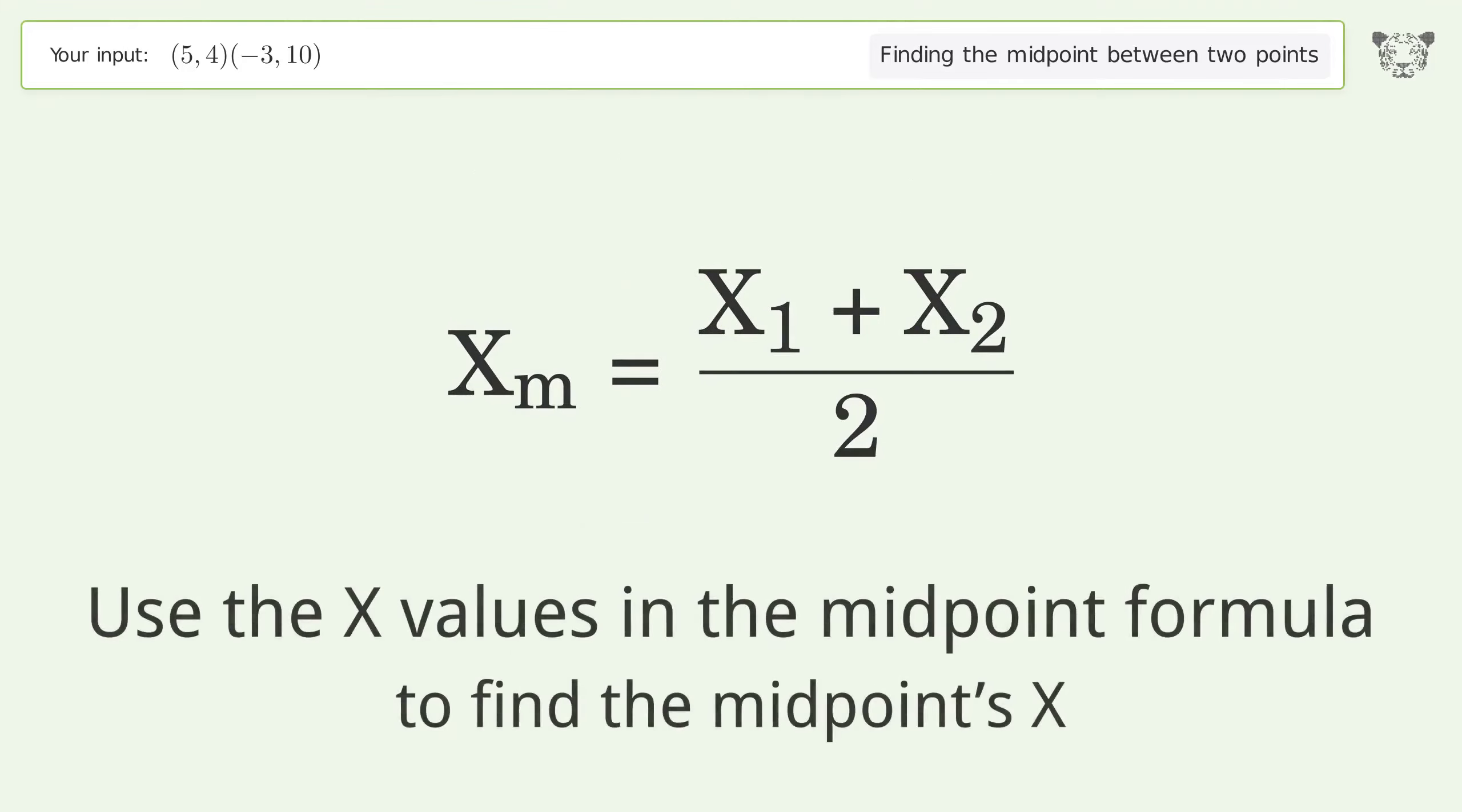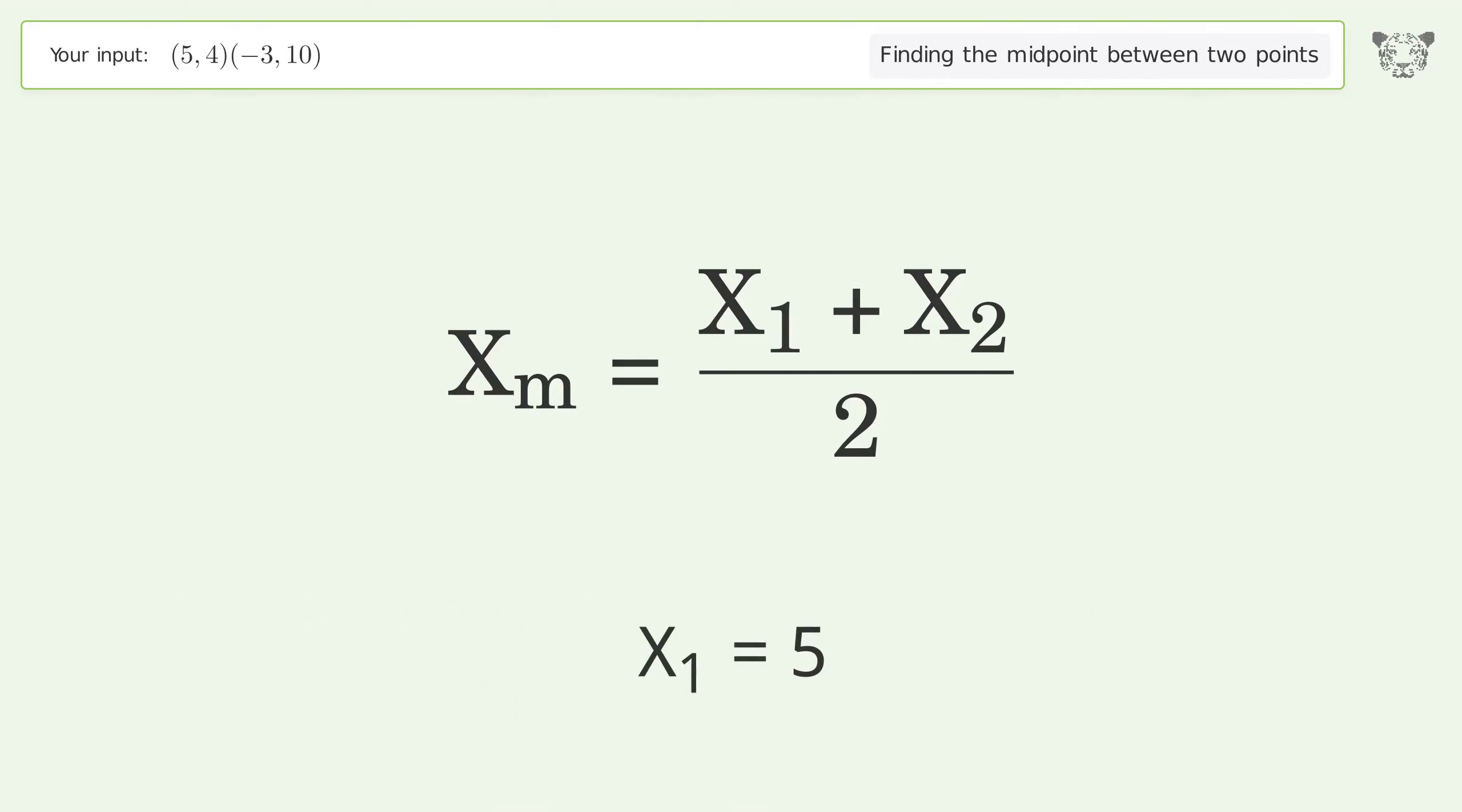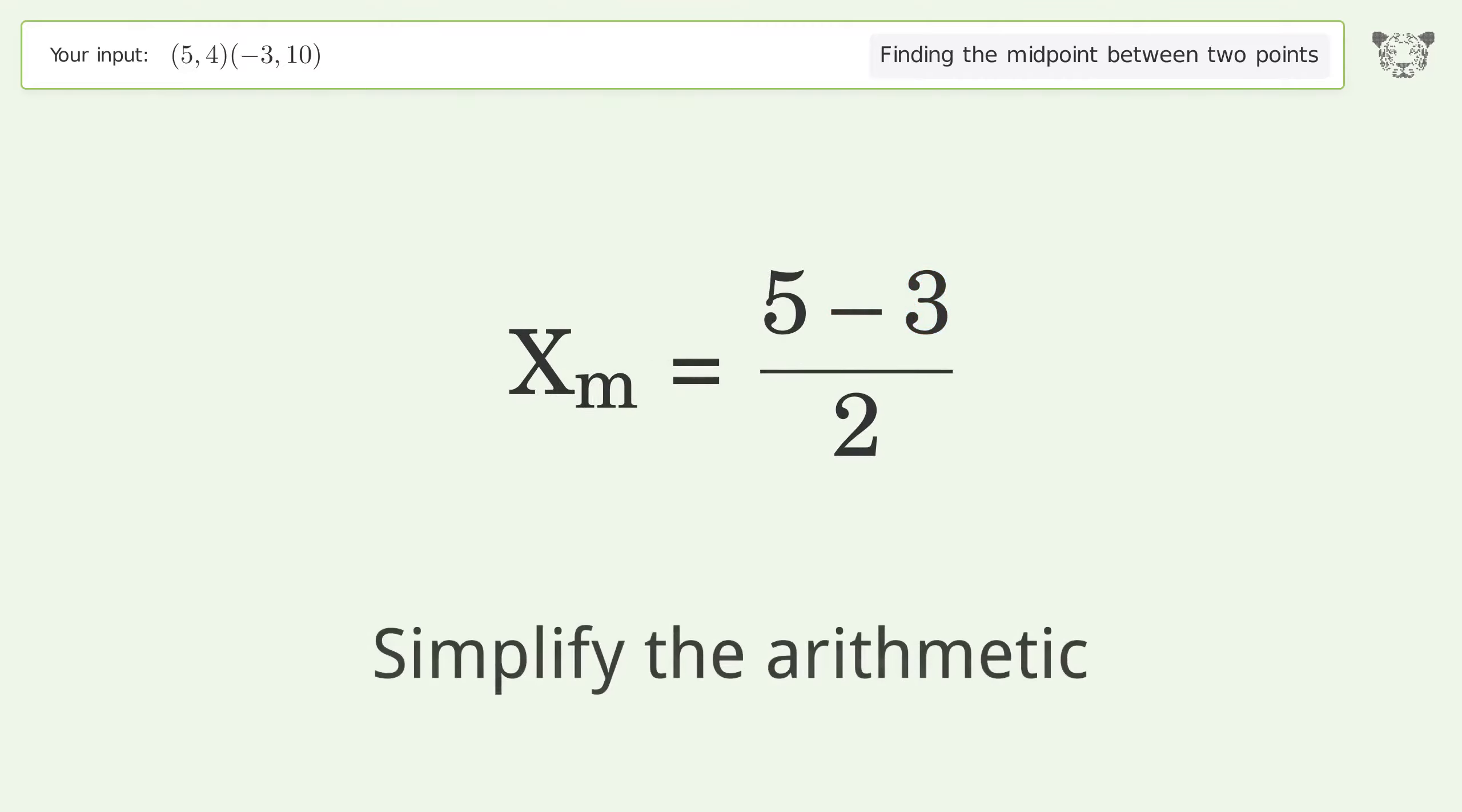Use the x values in the midpoint formula to find the midpoint's x. x₁ = 5, x₂ = -3. Simplify the arithmetic.